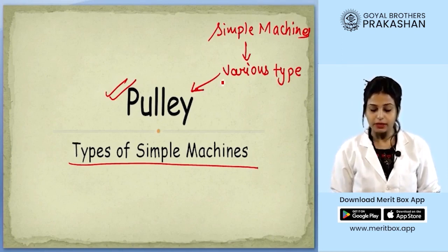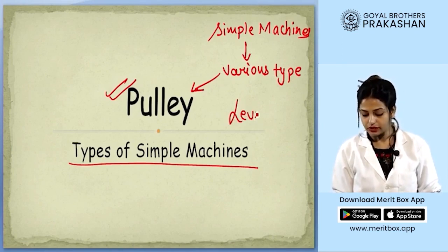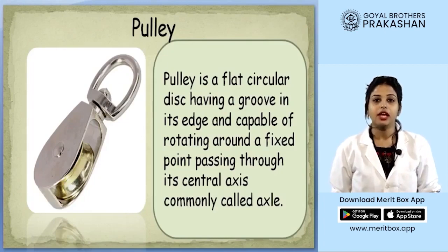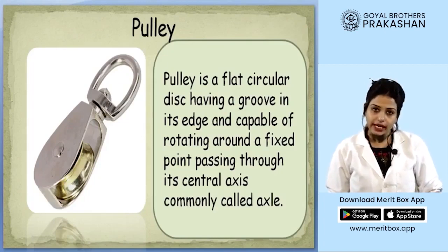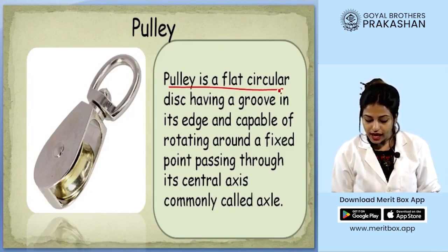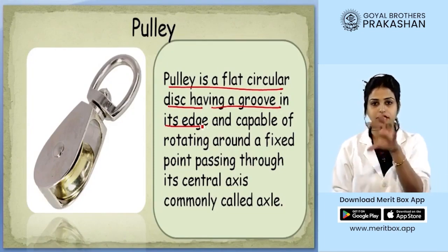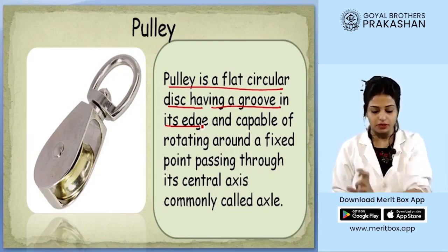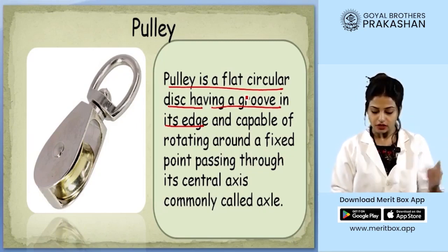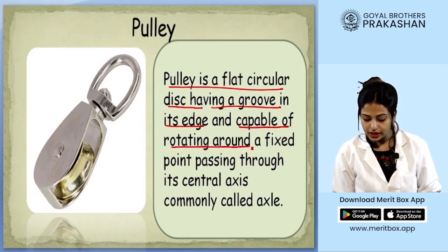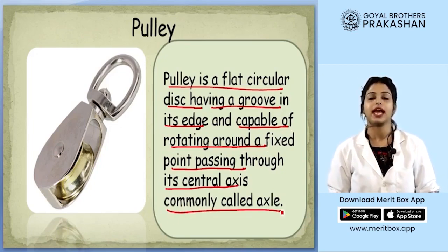Before we talk about pulley, we already learnt about lever and various orders of lever. So let's start with the topic today — pulley. We will begin by defining what a pulley is. Pulley is a flat circular disc having a groove in its edge and is capable of rotating around a fixed point passing through its central axis, commonly called as axle.